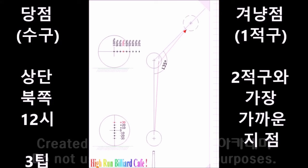가운데 그림은 원본 그림입니다. 부산에 있는 하이런 카페에서 가져왔고, 출처는 네덜란드로 출축이 됩니다. 그림의 왼쪽에 원이 2개 있죠. 위에 있는 것은 두께이고, 밑에 있는 것은 상점으로 상단 3팁을 가리키고 있습니다. 겨냥점은 두께와 같은 개념이지만, 두께는 변화가 많고, 가장 가까운 거리, 제1적구의 한 점인데 그 점은 제2적구와 가장 가까운 지점입니다. 이렇게 생각을 하는 것이 단순하고 편리합니다.